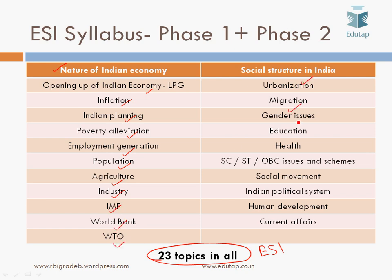Continuing the 23 ESI topics: gender issues, education, health, SC/ST/OBC issues and schemes, social movements, political system, human development, and current affairs. This is the right way to categorize the topics so that it becomes easy for you to prepare the various sections and topics given in the syllabus.